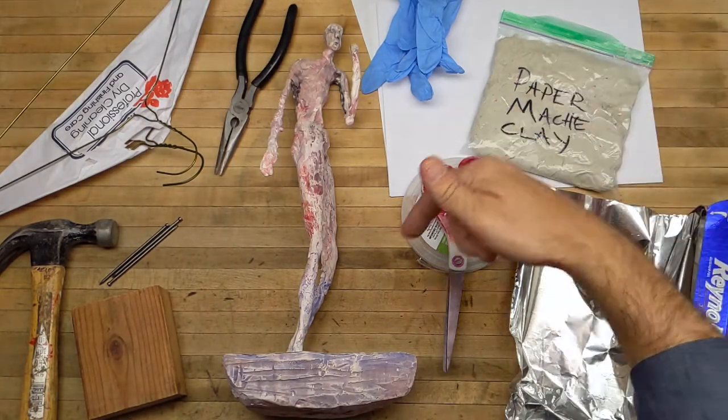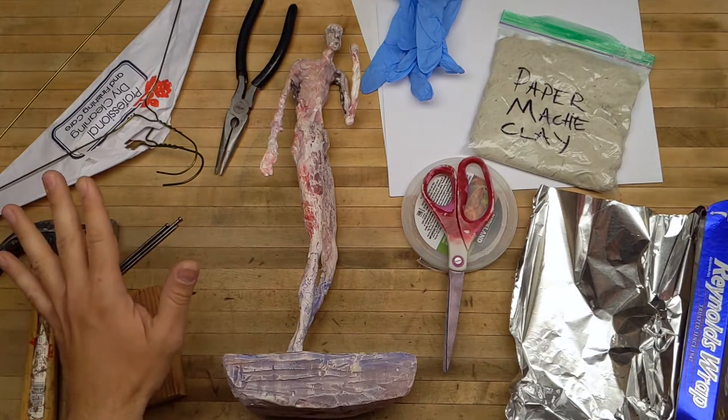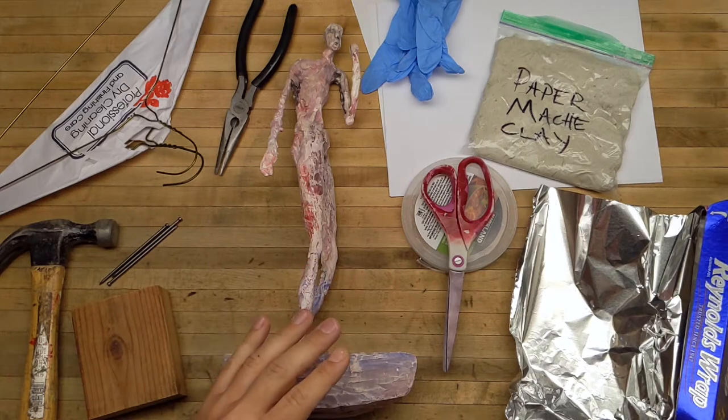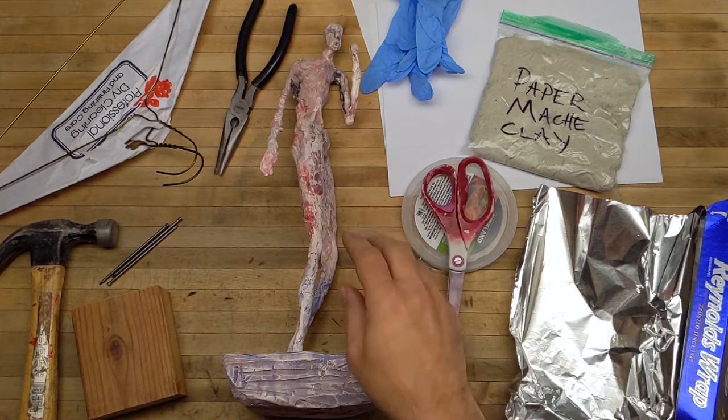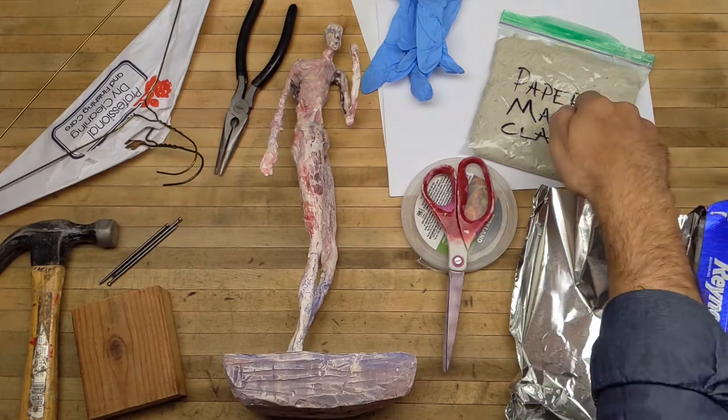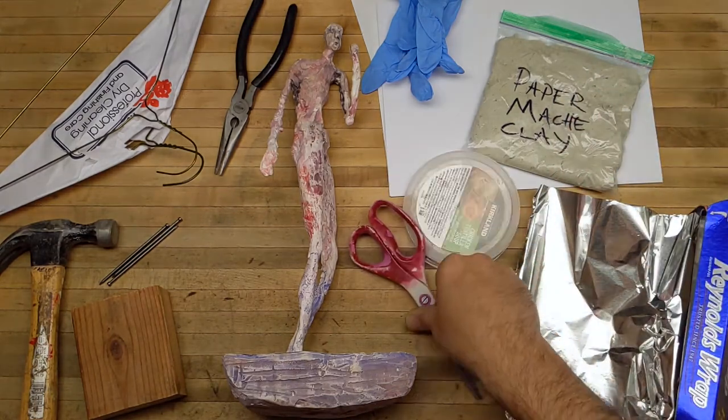Here's our paper mache that we're going to spread over once we've built the armature out of all these materials. We'll use aluminum foil to build the figure up, paper mache clay, some plastic lids.